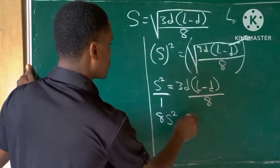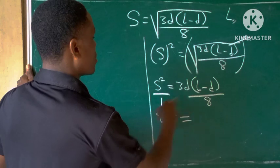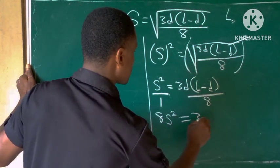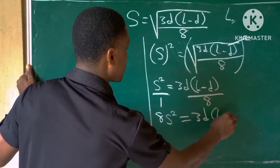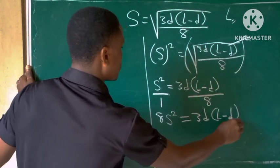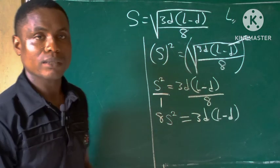Equal to 1 times this will still give us this. So we are left with 3d(l minus d).